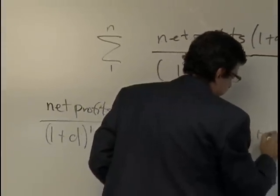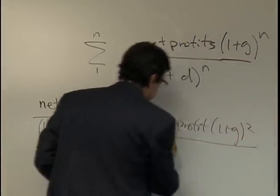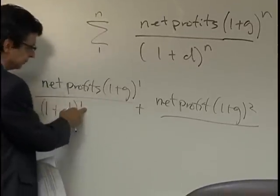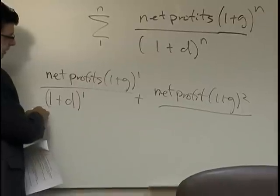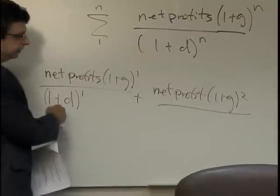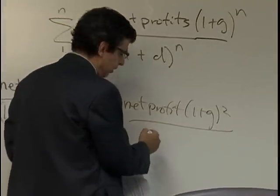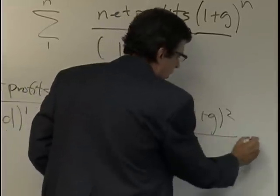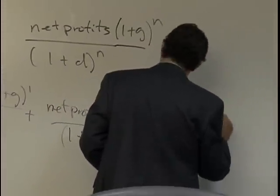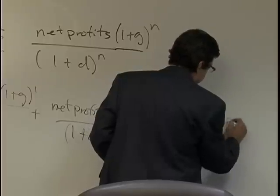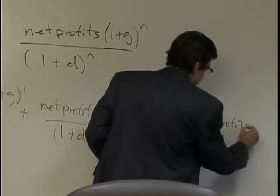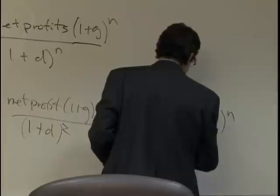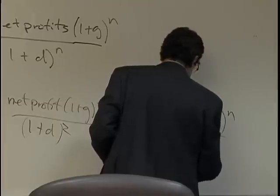Just to write it out a bit more. So what we're doing is discounting net profits in the first year, plus the discounted net profits in the second year, all the way up to net profits in year N. That's all this is.